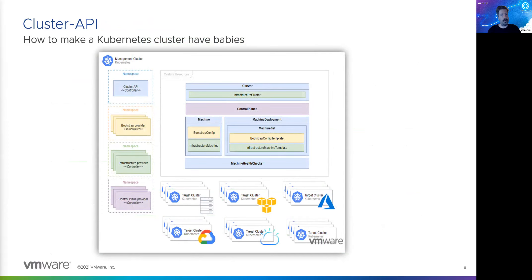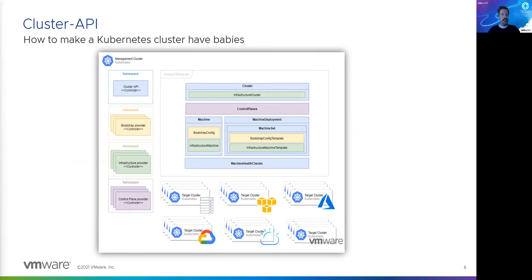TKGM and TKGS are very similar because they share the same core technology, which is built around something called Cluster API. Cluster API is an open source sub-project of the Kubernetes project — an initiative to enable Kubernetes to spawn additional Kubernetes clusters. You could jokingly say it's how to make a Kubernetes cluster have babies, or you could call it Kubernetes inception — both are accurate.